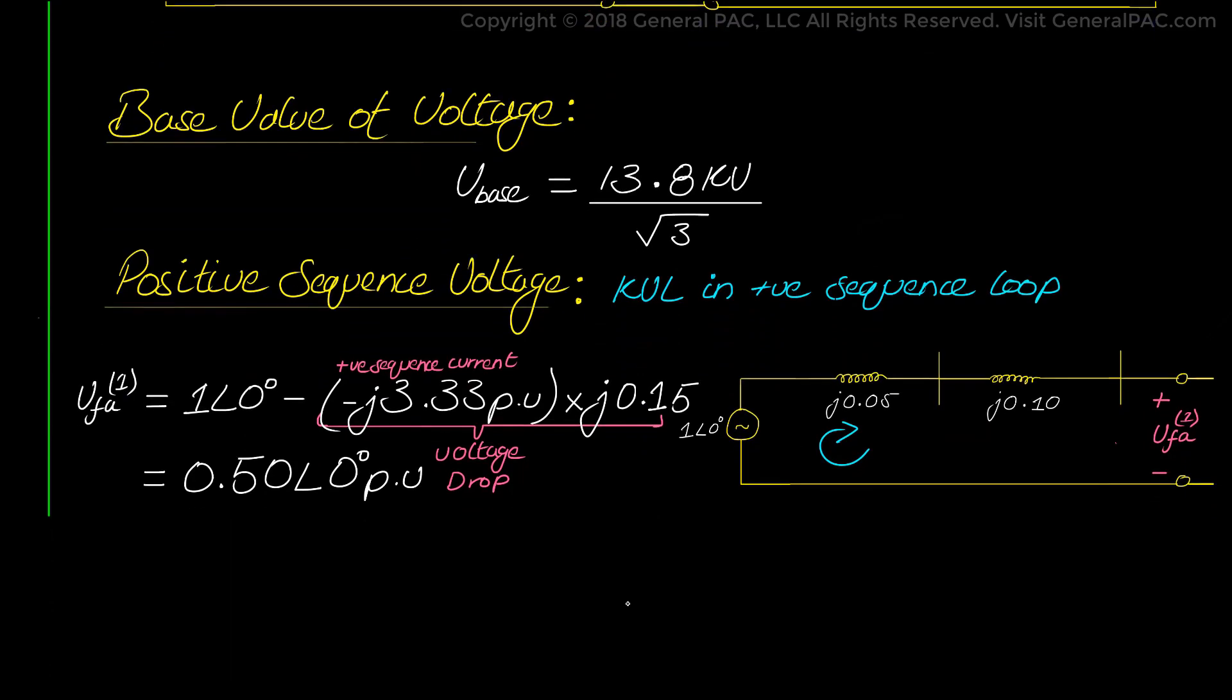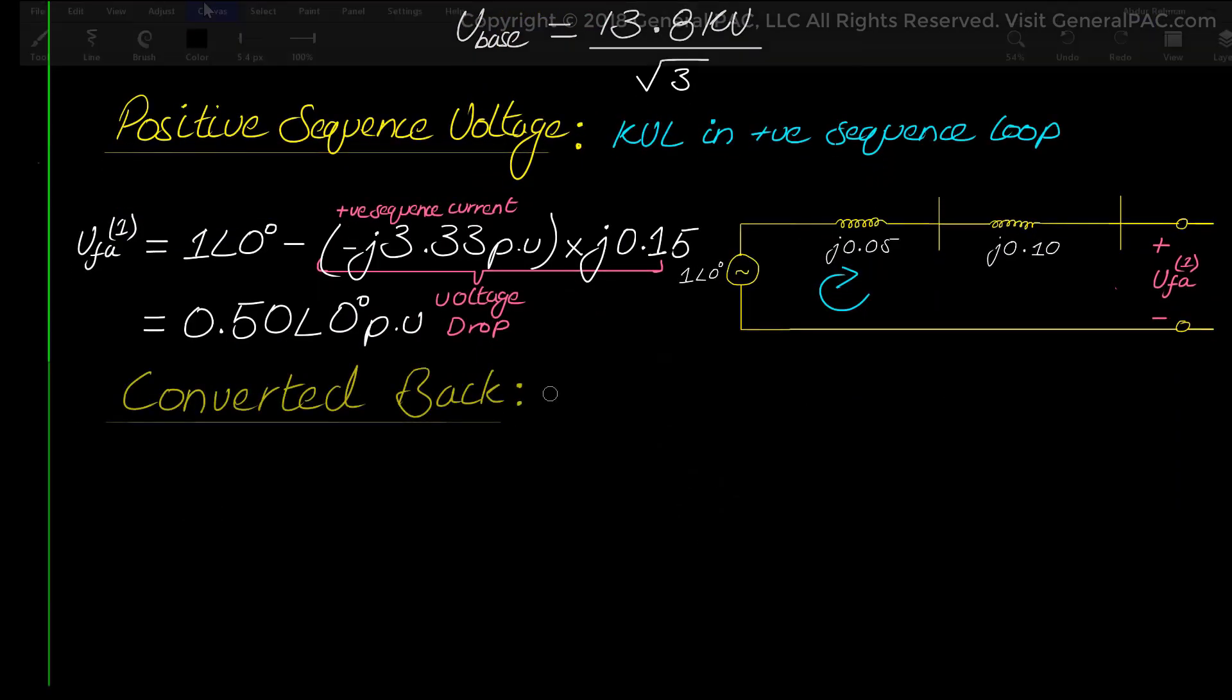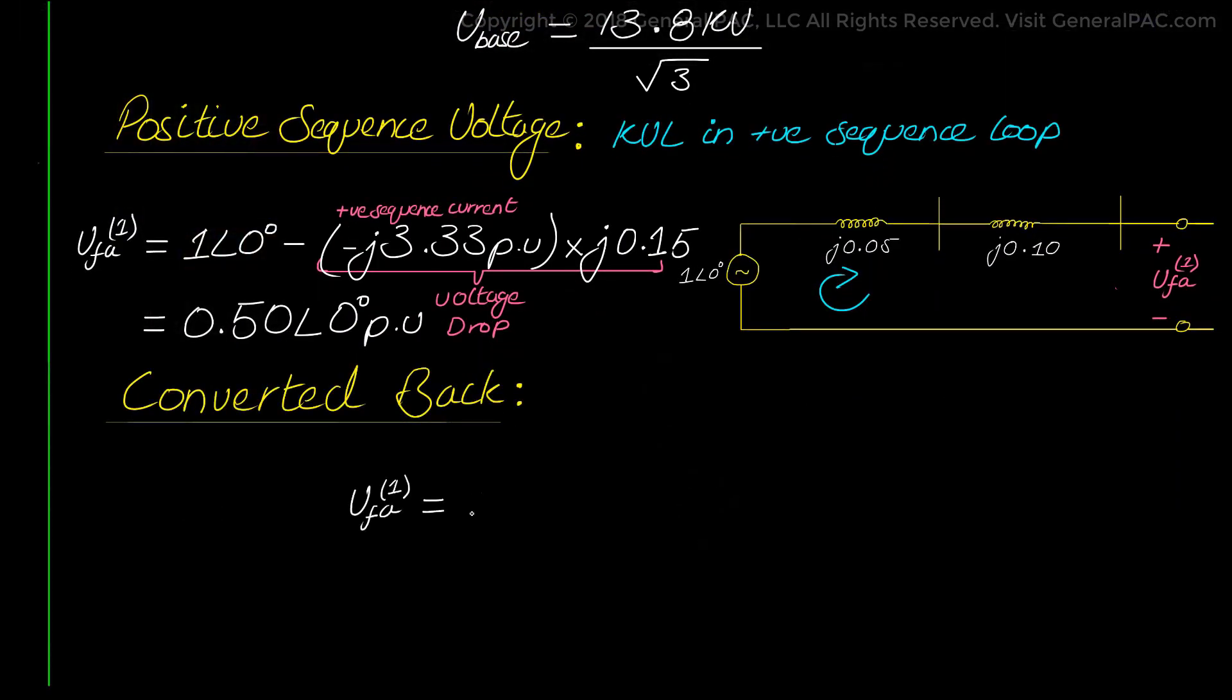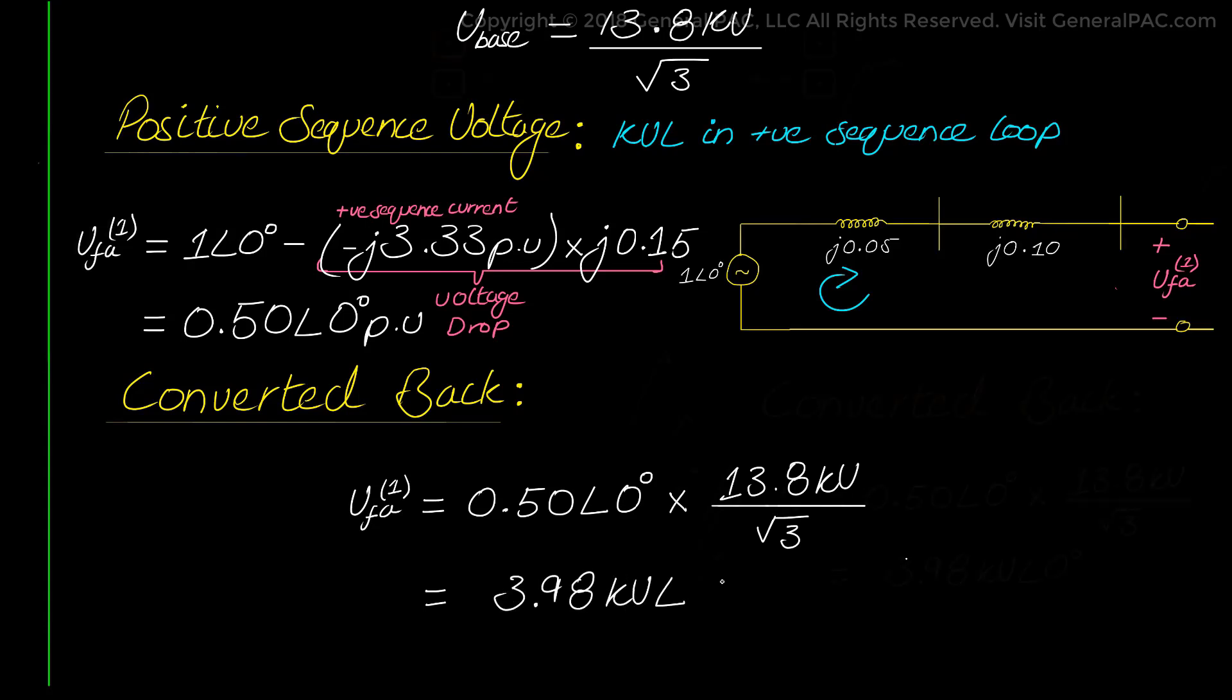Now this is a per unit value, and we need to convert this value to sequence voltage quantities. And we do this by simply multiplying the base value that we calculated earlier, which gives us the positive sequence voltage of 3.98 kV at the angle of 0 degrees.